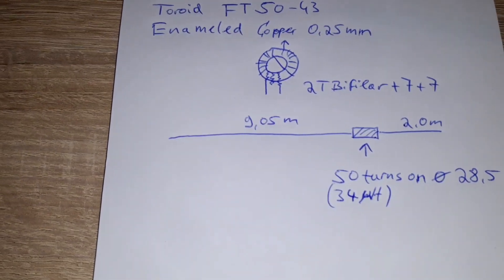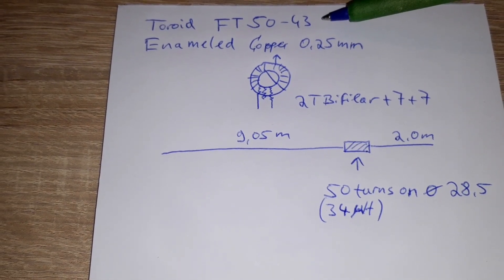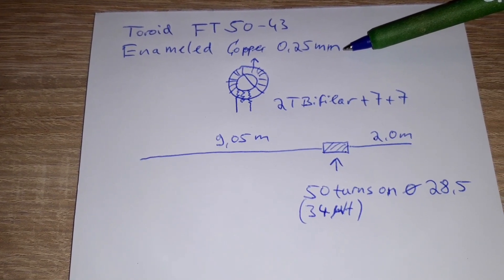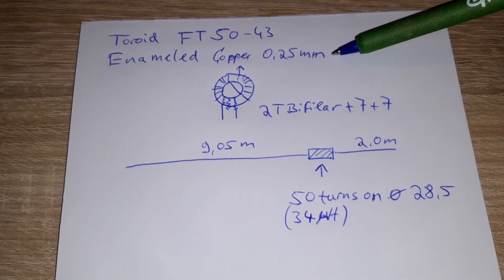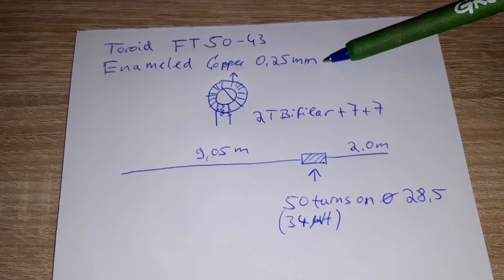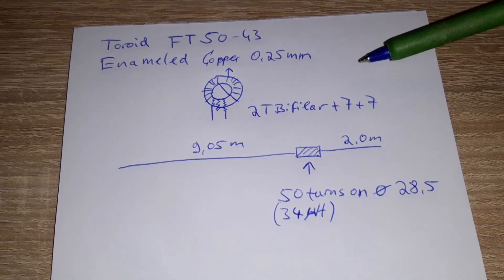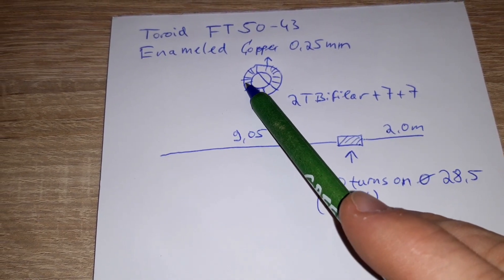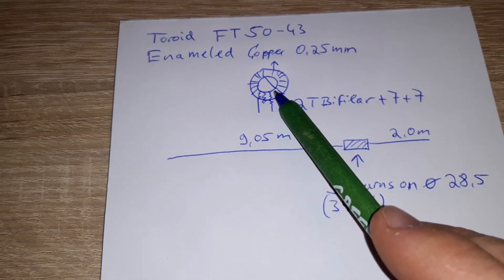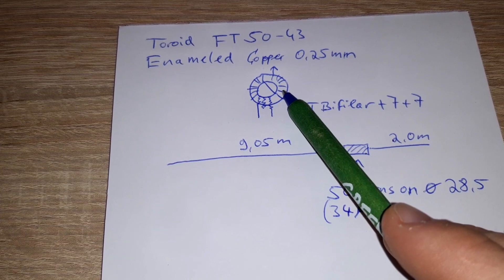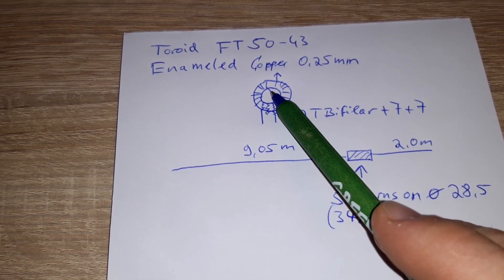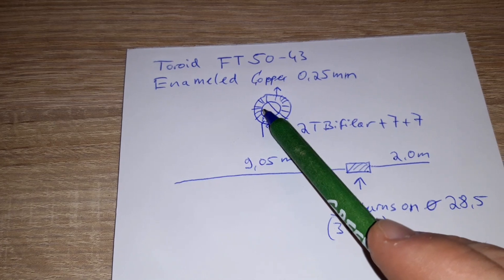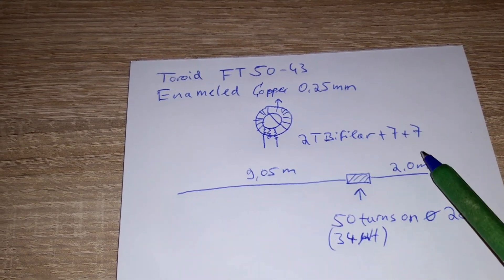The transformer is made of an FT50-43 toroid. The enameled copper wire is 0.25 mm. Please do not go thicker than that, because if you go thicker, the SMA connector does not fit into the hole here. Then you have to wind two turns bifilar, then seven, then go across the toroid to the upper side and wind another seven in this direction. But please note, this cable here which crosses the toroid has to be a little bit to the side because we have to put in the SMA connector after that.